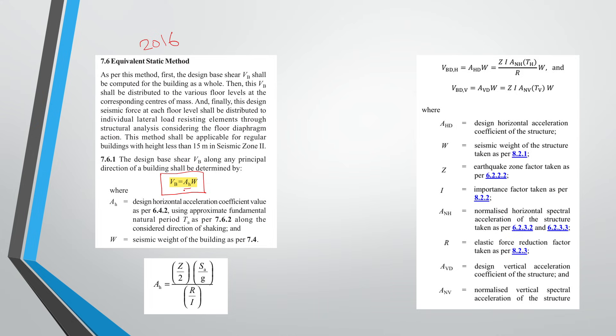And this AH is the design horizontal acceleration coefficient. So the formula for this AH was Z by 2, SA by G, divided by R upon I. Here, the zone factor...